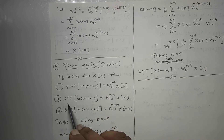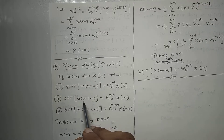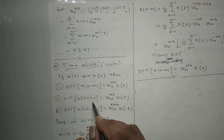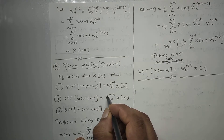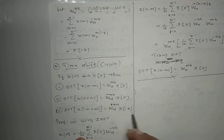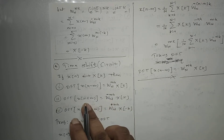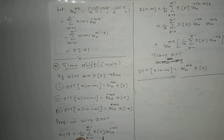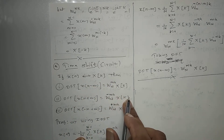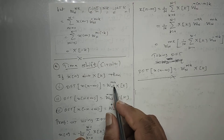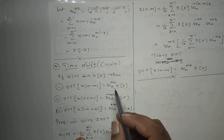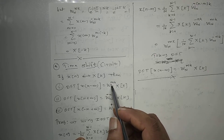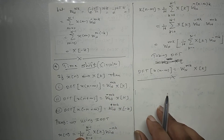Similarly, if we advance the signal - x[n+m] - then its DFT will be WN raised to minus mk into X[k]. Agar n mein plus m hai to DFT mein minus m aata hai, aur agar minus hai to plus rahega. So if x[n+m] has a lead phase in time domain, then the DFT domain will have a lag phase - meaning that much phase will be reduced.